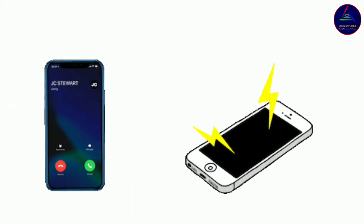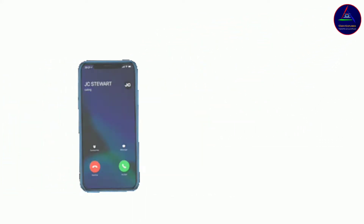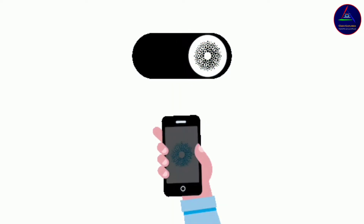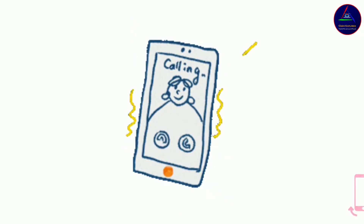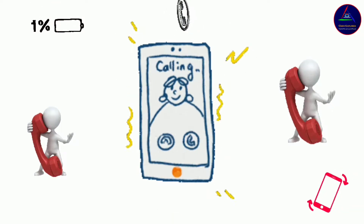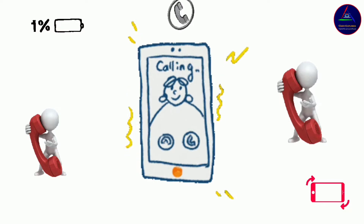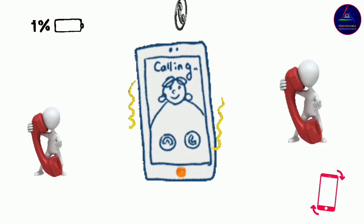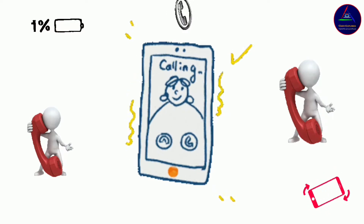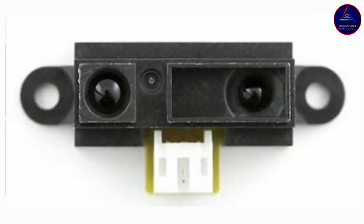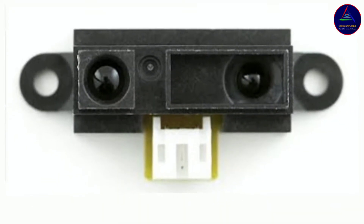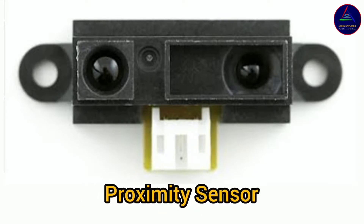While making a phone call, we all have seen that the smartphone screen turns off automatically. When the phone comes near a nearby object, like when making a phone call, we take our phone closer to our ear and the screen turns off automatically. This is due to the fact that the smartphone has a proximity sensor.